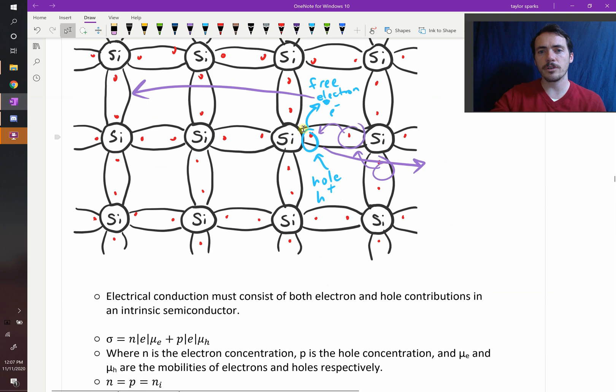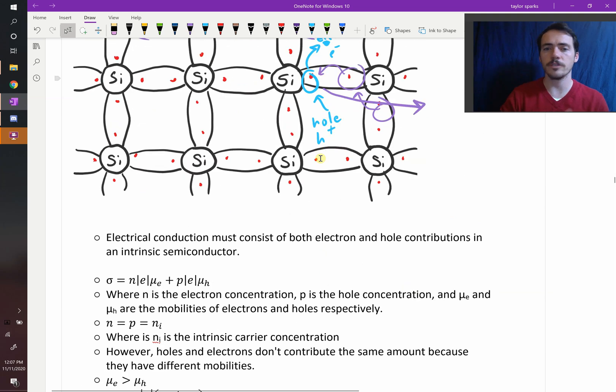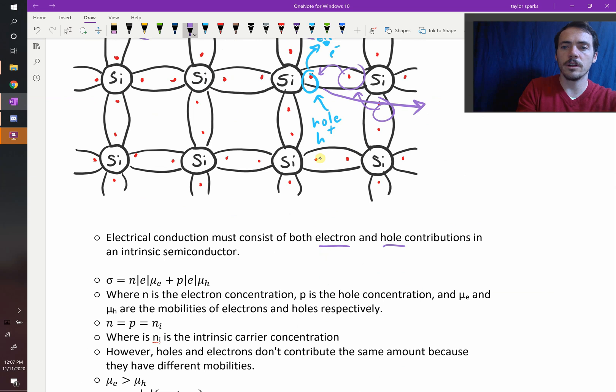So that is intrinsic semiconductors. Again, because every time we created an electron, we also created a hole, we have the same concentrations. Electron and hole contributions are included, and they have the same concentration.